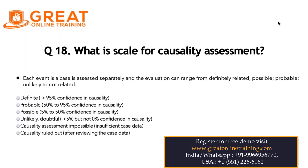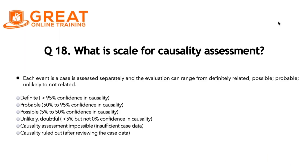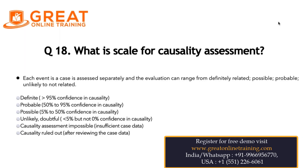If we have more than 95% confidence in the causality, that means we are sure the event happened because of the medication — we consider it as definitely related. In this assessment, we will also have de-challenge information, the event onset which happened after receiving the medication, and pharmacological evidence or new literature evidence as well. Based on these criteria, we consider the case as definitely related.